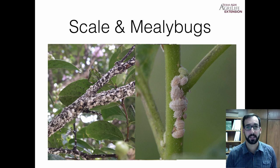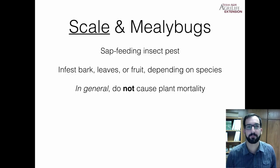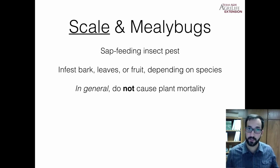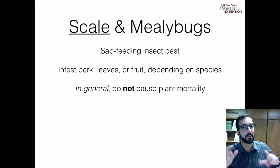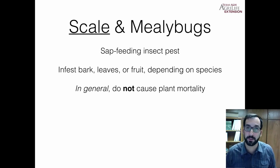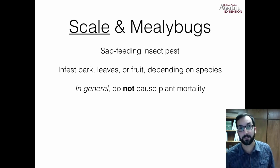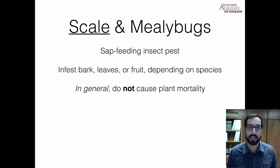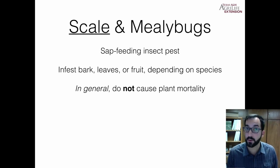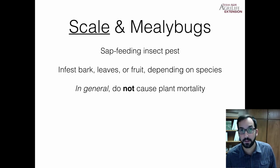Now going on to scale and mealybugs. Scales are sap-feeding insect pests that infest bark, leaves, or fruit depending on the species. In general, they do not typically kill the plant — though there are some exceptions. In a greenhouse setting where you're trying to sell plants, it's very important to keep very low numbers. In the landscape, on the other hand, it's not a huge issue unless it's one of the few exceptions of scales that can kill plants.